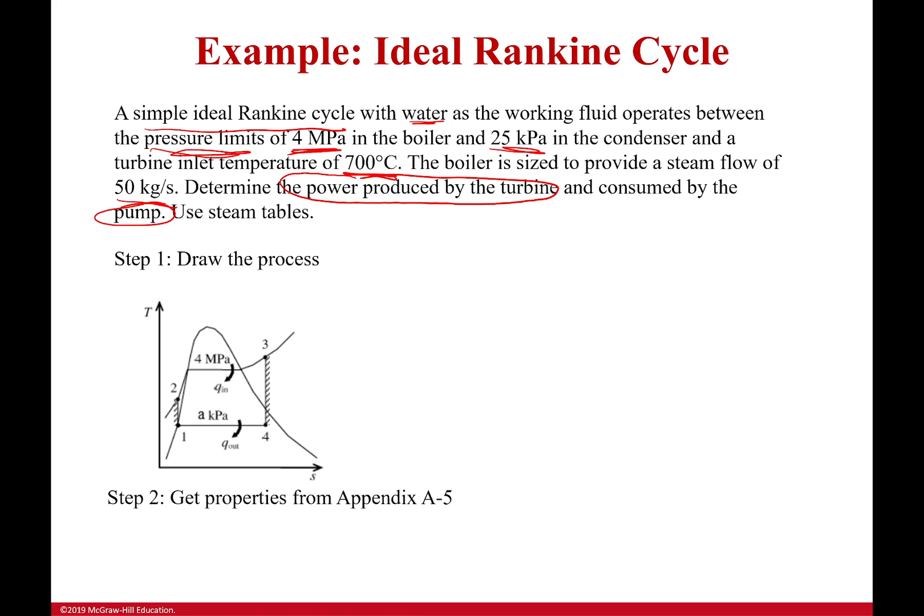So first thing we're going to do is we're going to get all the properties we can from Appendix A5. I know it's a saturated liquid, which means its quality is equal to zero. And I also know its pressure, which is equal to 25 kilopascals. I should have started with one rather than three. So when I do that, I can go there. I realize that my enthalpy is going to be the enthalpy of a saturated liquid. And I can just write that down. I'm also getting the specific volume. If you're wondering why I'm getting specific volume, it's because the work of the pump is, way back in chapter four, boundary work is equal to my specific volume times my change in pressure. That's the boundary work. That's the pump, the work that the pump is doing.